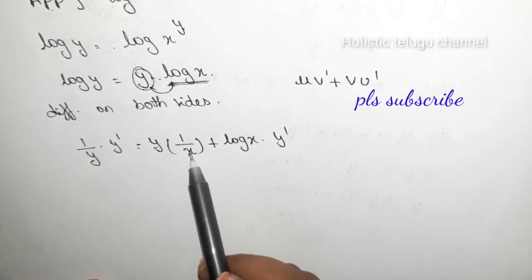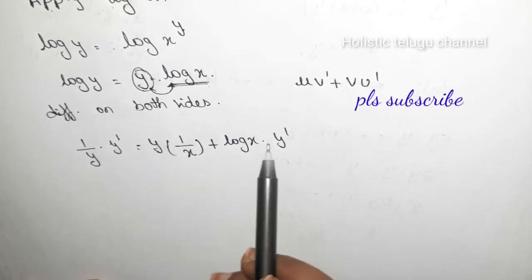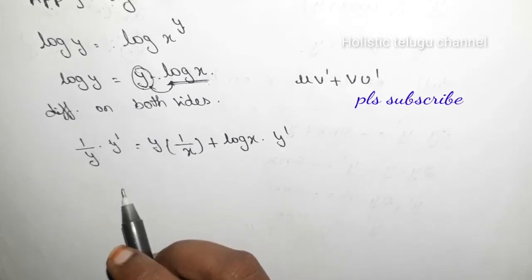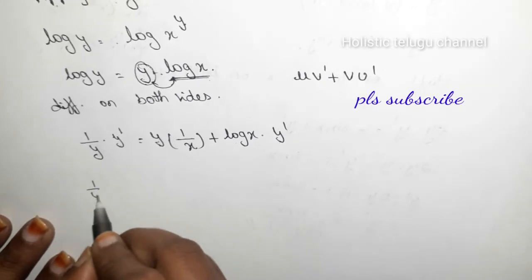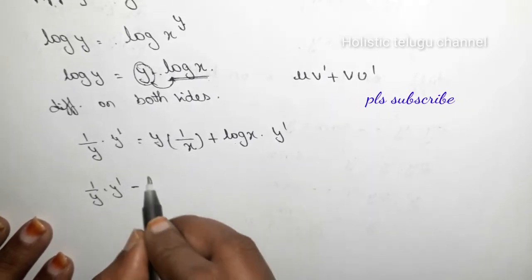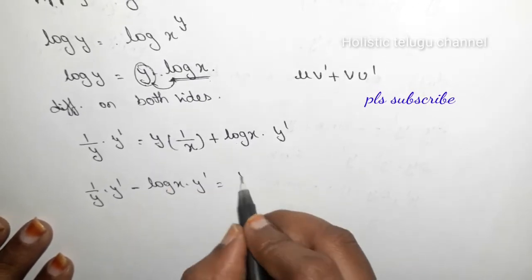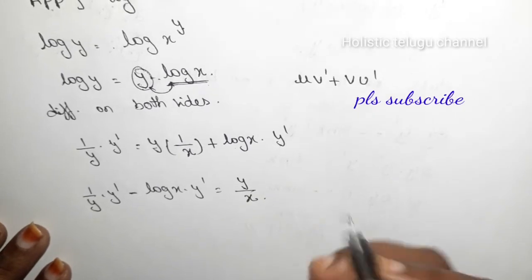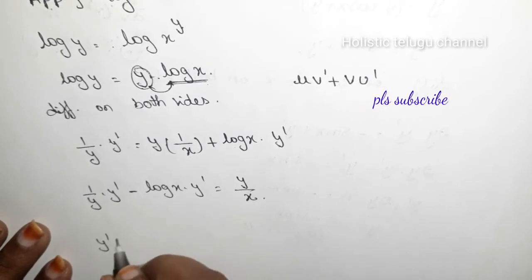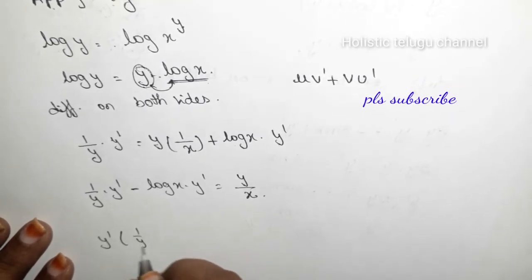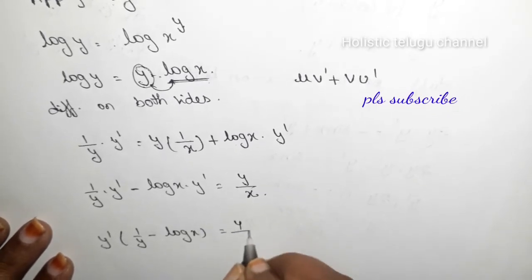So differentiating log x gives 1/x, and differentiating y gives y'. Now collecting the y' terms on the left: (1/y)·y' minus log x · y' = y/x.